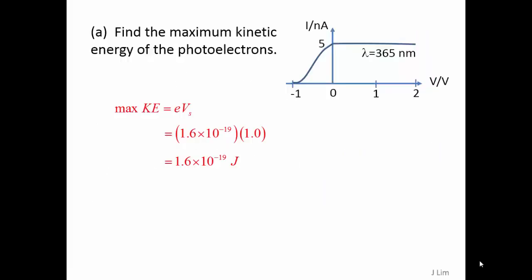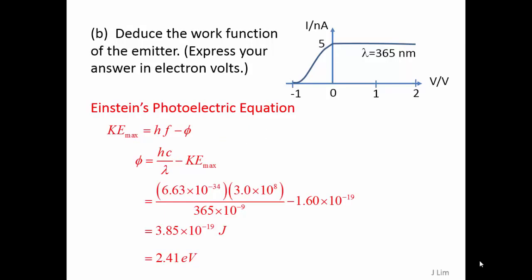The maximum kinetic energy is given by the stopping potential. In this case, the stopping potential is 1 volt. Therefore, maximum KE is 1.6 times 10 to the power of minus 19 joules.